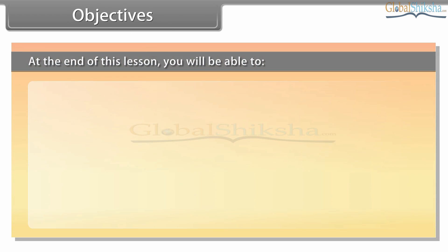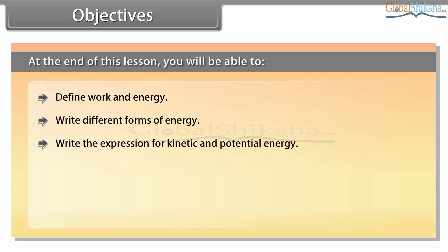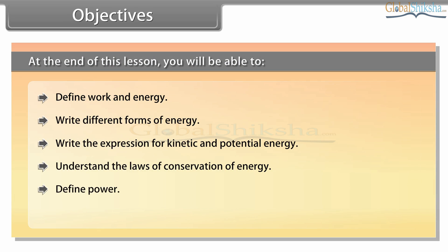Objectives. At the end of this lesson, you will be able to: define work and energy; write different forms of energy; write the expression for kinetic and potential energy; understand the laws of conservation of energy; define power; and write the units of work, energy and power.